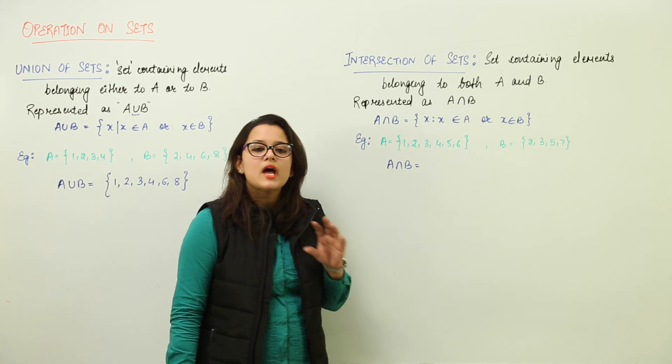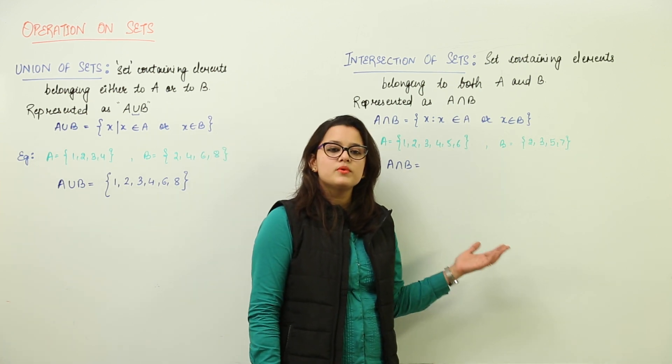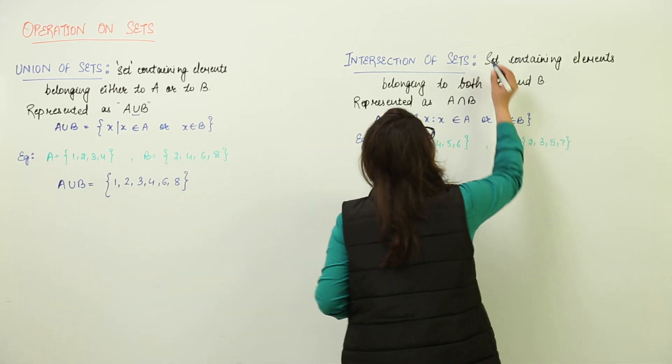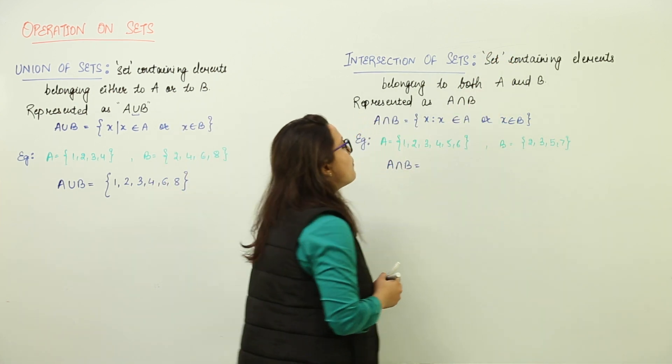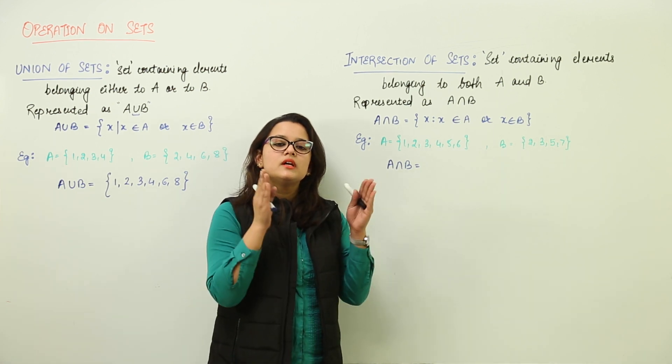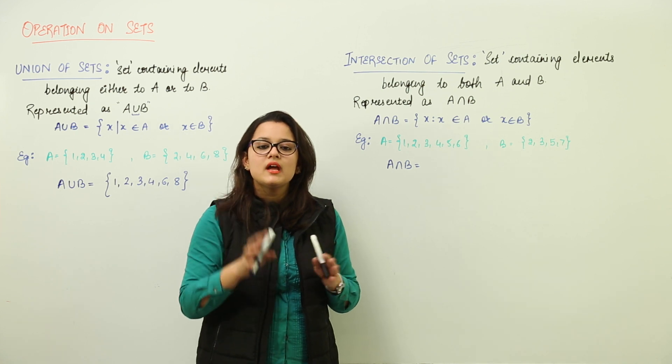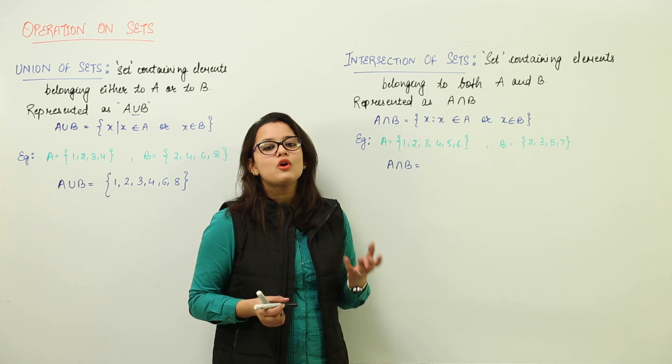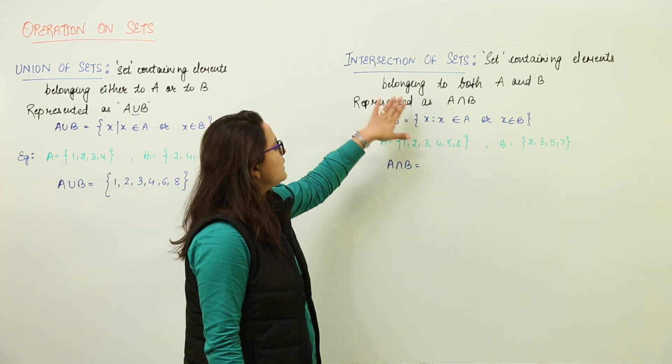Next we have intersection. Intersection is the opposite of union - it is the set which contains elements belonging to both A and B. The element should be present in both, that is, common to both sets.